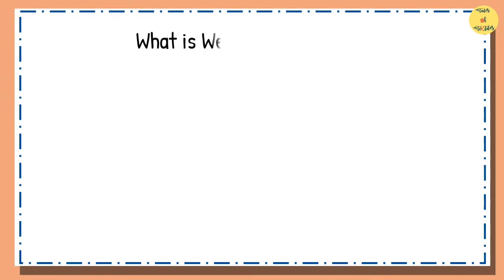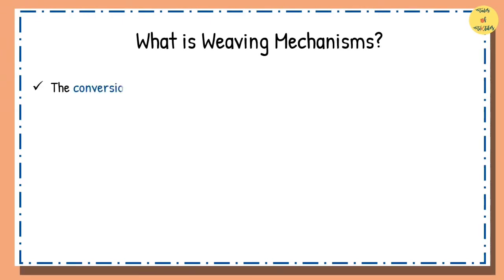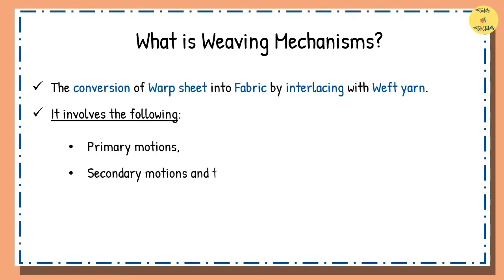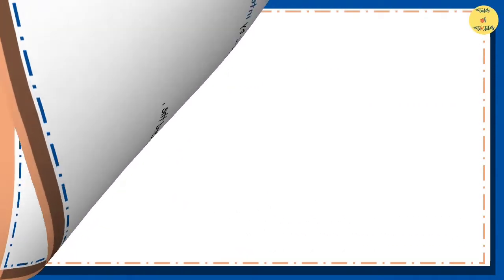What is weaving mechanism? The conversion of warp sheet into fabric by interlacing with weft yarn requires basic operations to be carried out on the loom in a specific order. It involves the primary motions, secondary motions, and the stop motions.